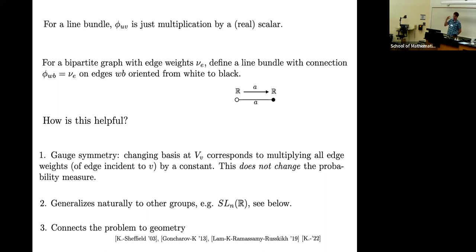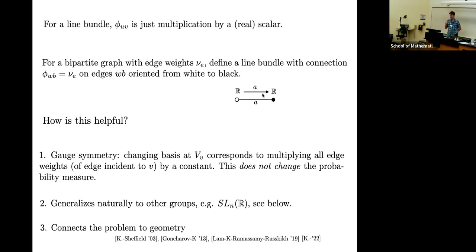We're going to generalize this setting to higher rank bundles, in particular SLN, when instead of having a line bundle, I'm going to have a dimension-N vector space R^N associated to each vertex, and the isomorphisms are going to be in SLN. That's another reason why this change of point of view from weights to connections is interesting — it gives you an interesting way to generalize to the higher-rank case.